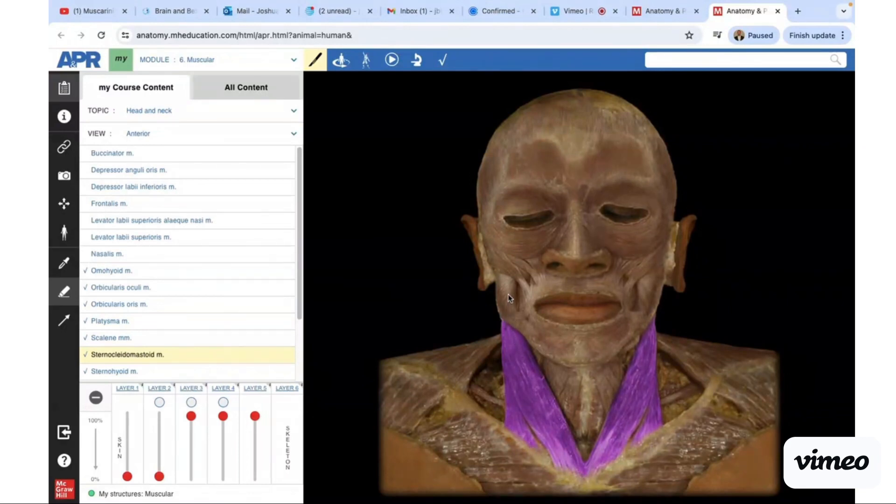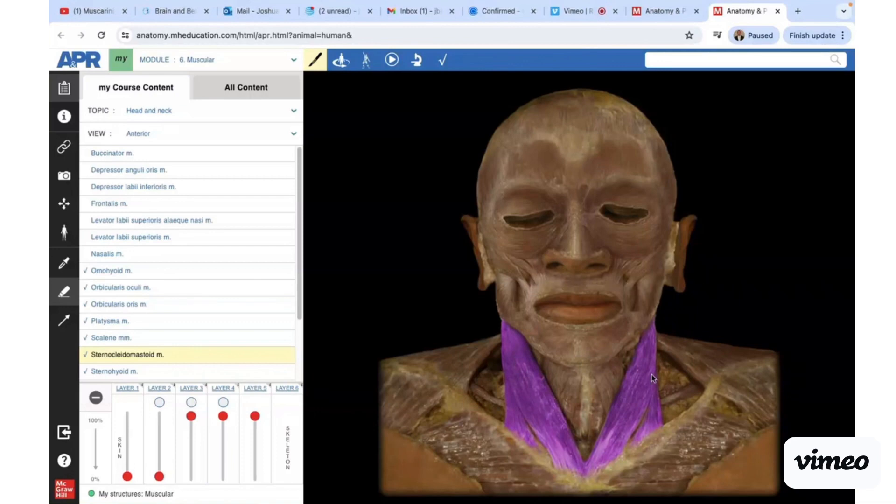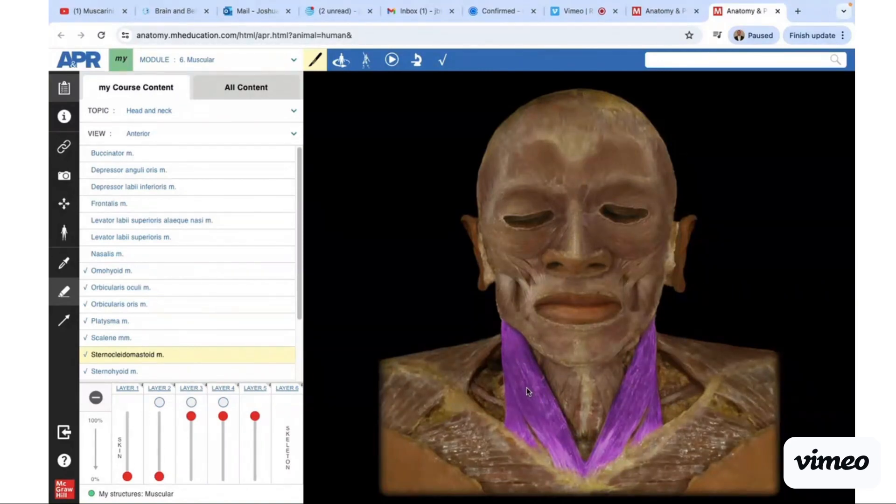The sternocleidomastoid has an origin site—it has a sternal head and a clavicular head—and then it has an insertion point in the mastoid process right behind the ear. If you contract one side unilaterally, the head will turn to the opposite side. You can palpate this muscle, especially if you turn your head the opposite way, you'll feel it contract.